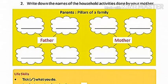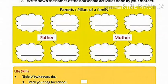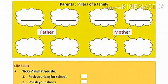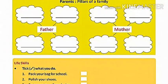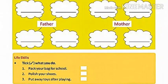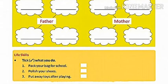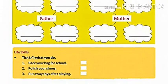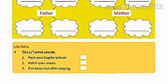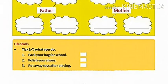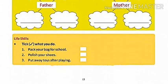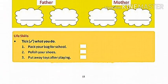At the bottom, in the yellow box, you will see 'Life Skills.' You have to tick the correct option for what you do at home. Number one: do you pack your bag for school? Number two: can you polish your shoes? Number three: do you put away toys after playing? Whatever you do, tick the correct option. That is your task for today. Okay students, bye-bye, take care.